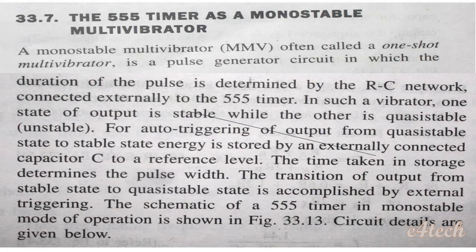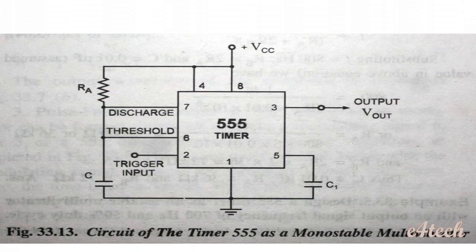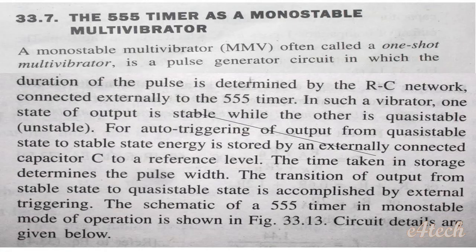The first application is a monostable multivibrator using the 555 timer. A monostable multivibrator, often called a one-shot multivibrator, is a pulse generator. In this circuit, one state of the output is stable while the other state is quasi-stable. For auto-triggering from quasi-stable to stable state, the energy stored in the externally connected capacitor is used as the reference level, and the time taken to charge the capacitor determines the pulse width.